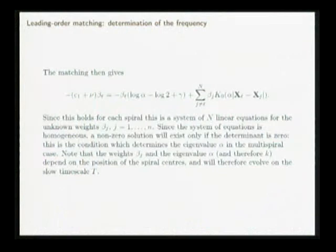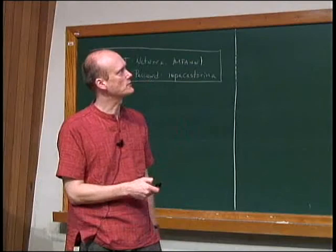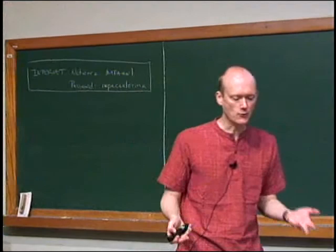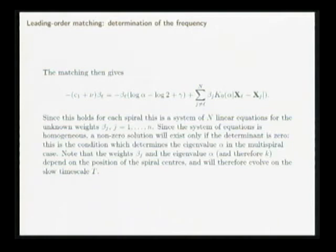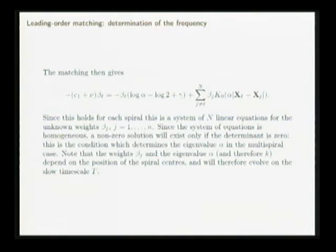In the end, when you do all the matching, you get an equation coming from the L-th vortex: on one side is the stuff from the inner expansion, and on the other is the sum of Bessel functions, one attached to each spiral in the outer region. For a single spiral, this was an equation giving the value of alpha, and I solved it for the asymptotic wave number. This time it's a system of equations for the betas — the unknown weights of each spiral solution. It's a homogeneous system, and I want a non-trivial solution, so the condition on the eigenvalue alpha is that the determinant of this system should be zero.